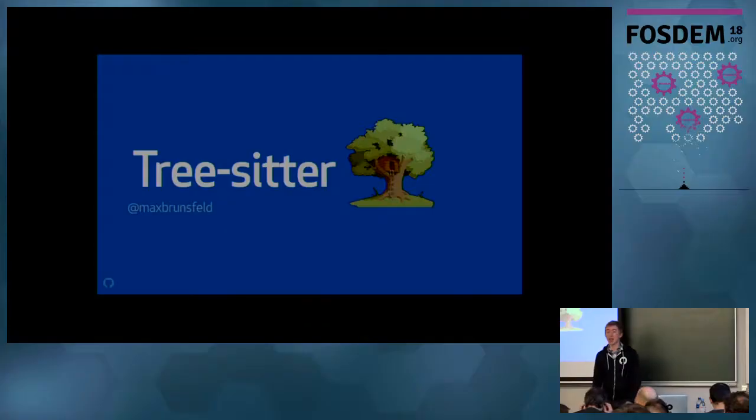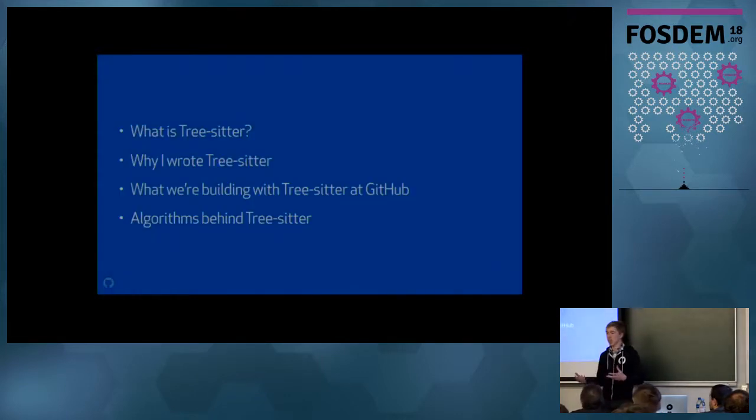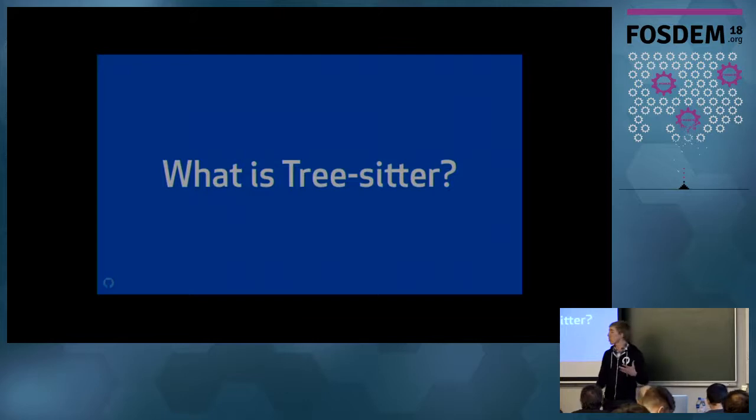Hi, everyone. I'm Max. I work at GitHub on the Atom Text Editor, and I'm going to talk about a parsing library that I've been working on for about four years now, initially as a side project and now as part of some production systems at GitHub. It's called TreeSitter. So I'm going to explain what it is and why I chose to write it, and then I'll talk about some of the things we're doing with it today at GitHub. And then finally, I'll talk about how it works. So first, what is TreeSitter?